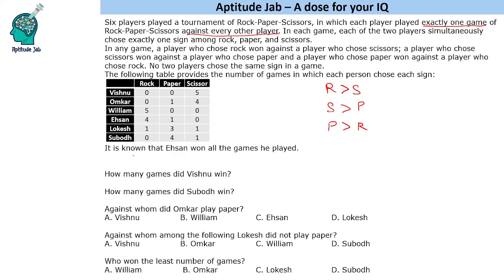One more piece of information given to us is that Ahsan won all the games he played. Based on this information and the table, we need to find out who won how many games and what is the outcome of each of the games.